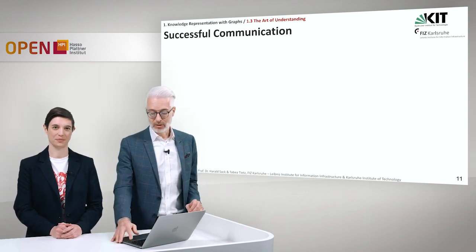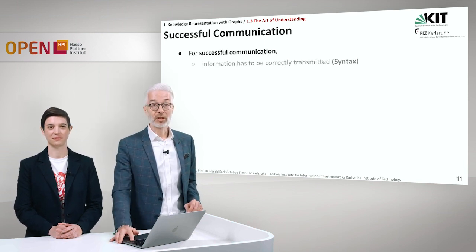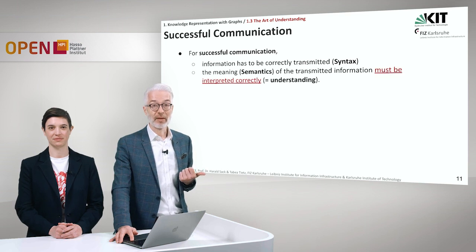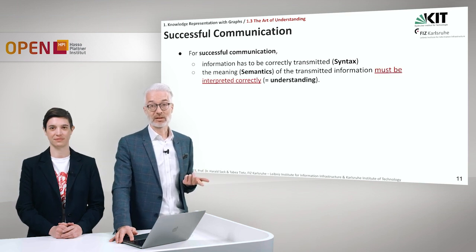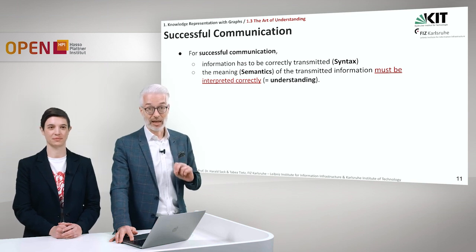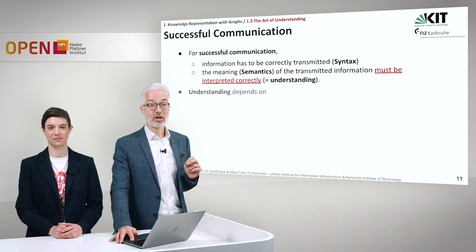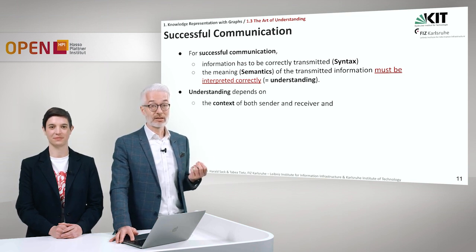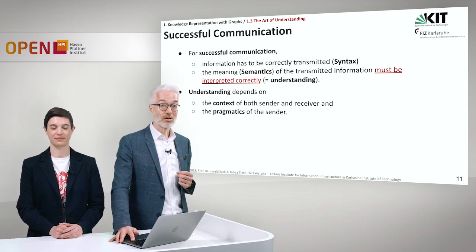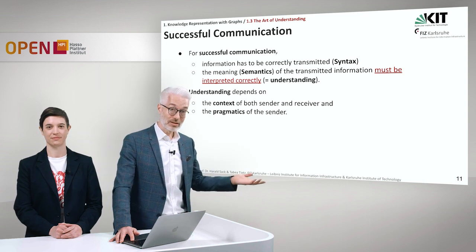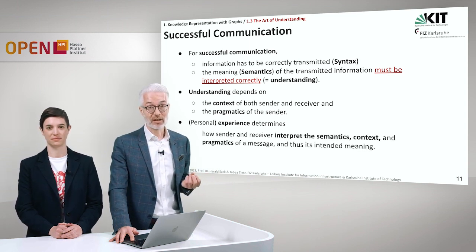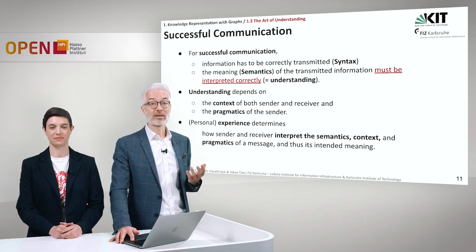Now, what does it take to make communication successful? For successful communication, information first has to be transmitted correctly — so the syntax has to be correct. Next, the semantics of the transmitted information must be interpreted correctly — this is very important. Understanding depends on the context of both sender and receiver, and of course on the pragmatics of the sender, meaning the intention: is it meant in earnest or sarcastically or ironically? And personal experience determines how sender and receiver interpret the semantics, the context, and the pragmatics of a message, and thus its intended meaning.